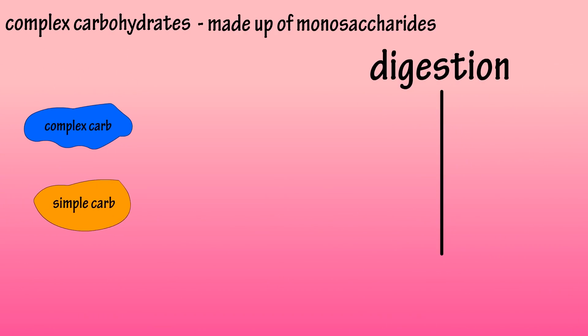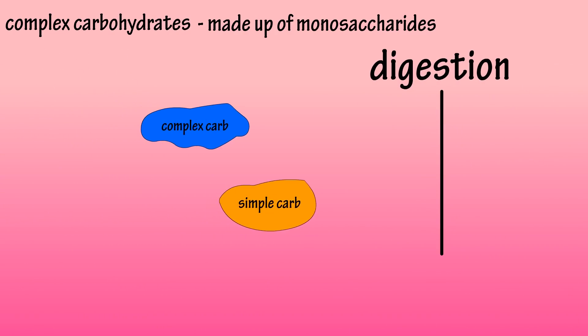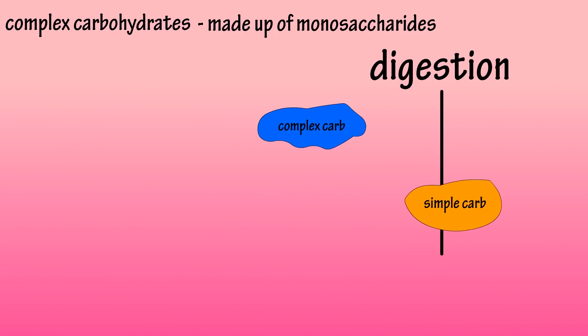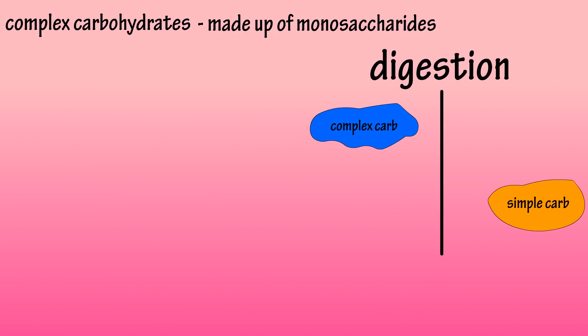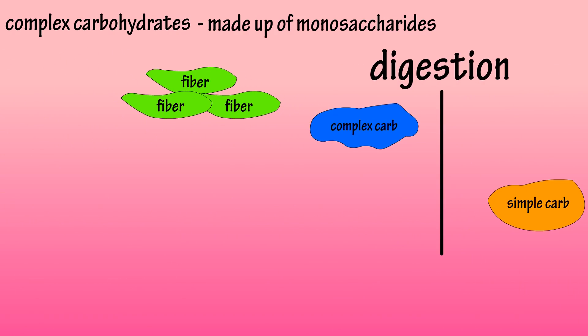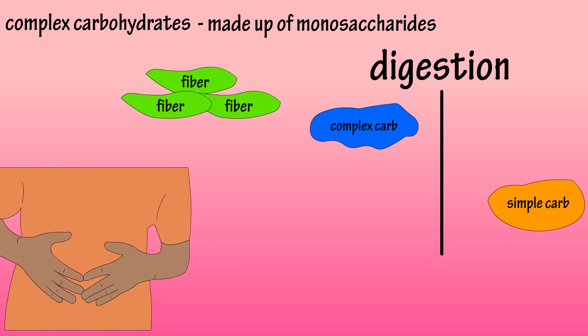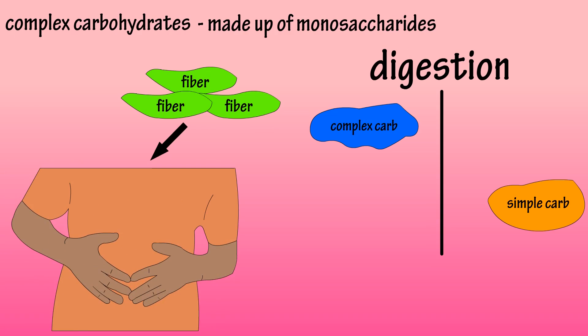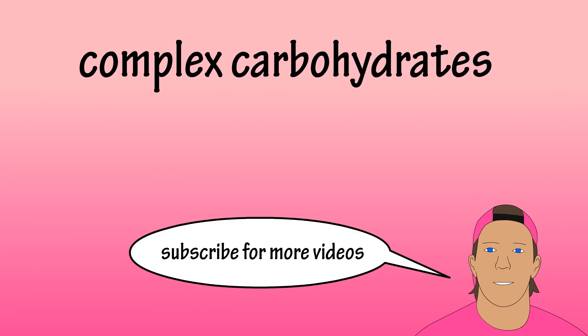Complex carbohydrates are digested more slowly than simple carbohydrates, as it takes the body longer to break them down, and their fiber content naturally slows digestion, making you feel fuller. And that would be the basics on complex carbohydrates.